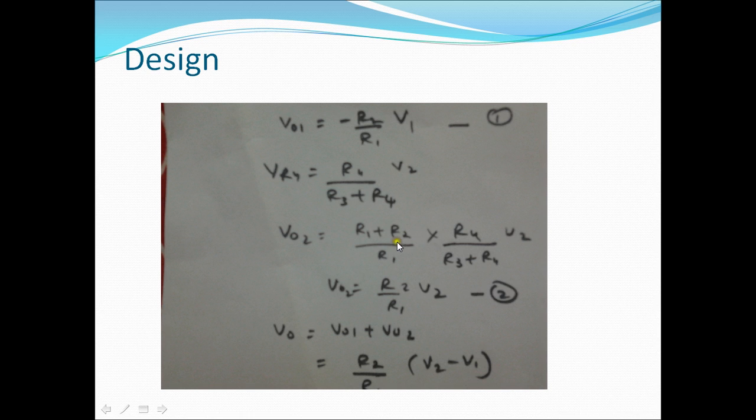We should choose such that VO2 should be R2 by R1. This is possible by choosing R1 is equal to R3 and R2 is equal to R4. We can see this and this will get cancelled. So R4 is equal to R2, so VO2 is equal to R2 by R1. So this is very important.